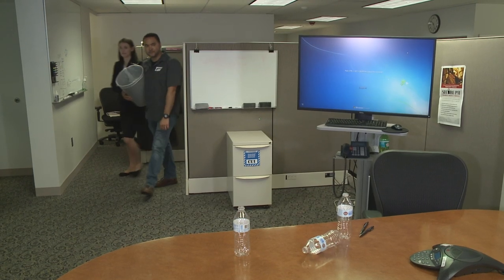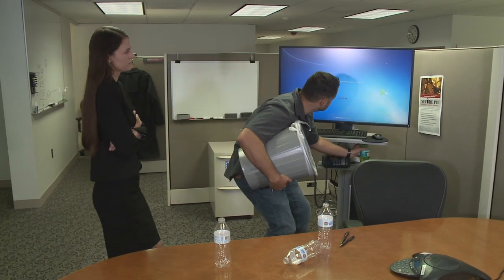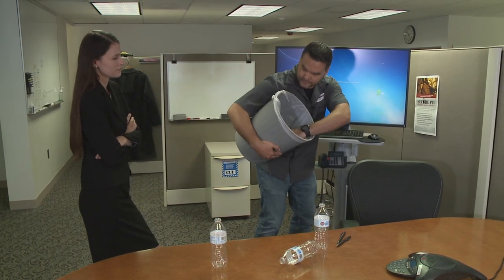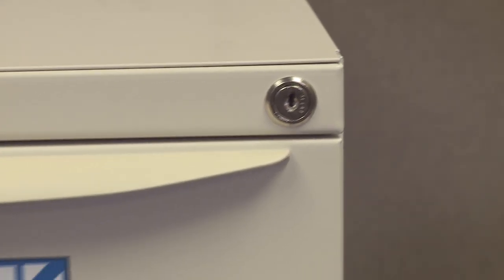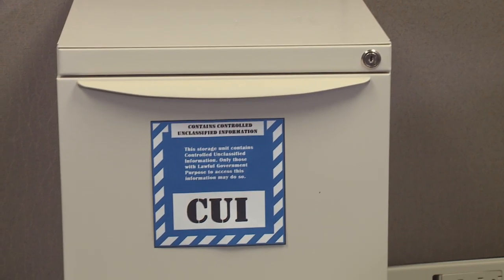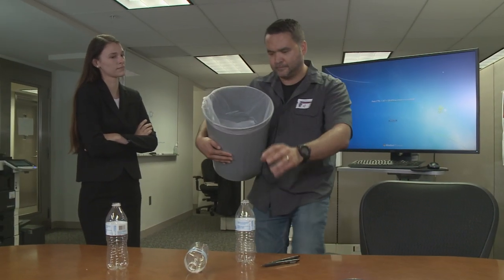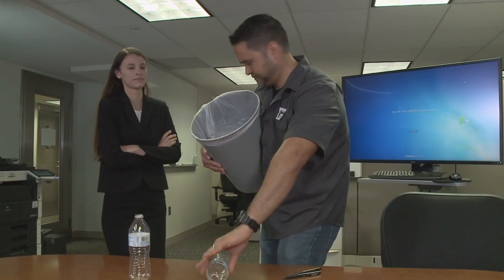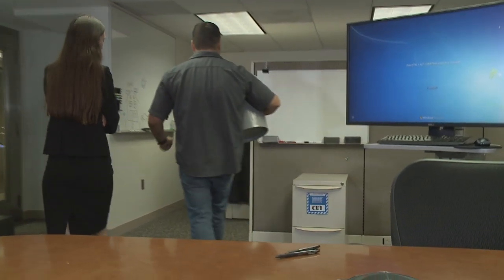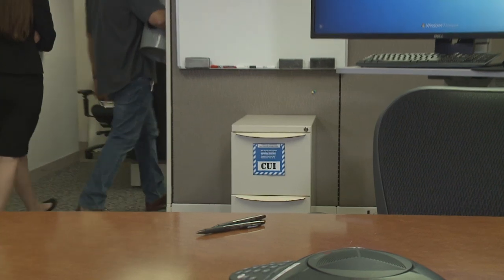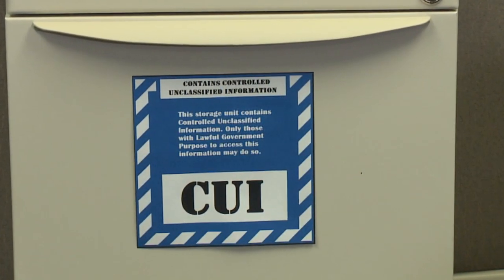Now back inside the office, we see that several secure locked file cabinets have been added to the area, and that all CUI has been moved inside these receptacles. Each file cabinet is marked as containing CUI. The cleaning crew now has conscientious escorts. Much better. This office is now on its way to being a controlled environment suitable for CUI storage and handling.